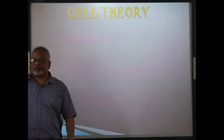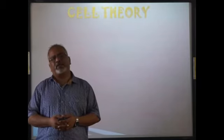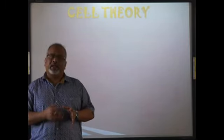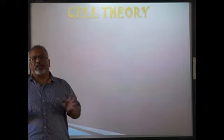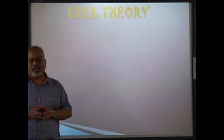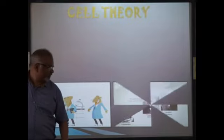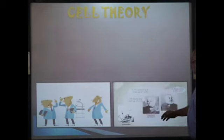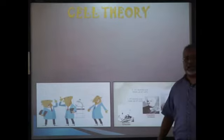Now, the cell theory. There were three scientists whose work led to the formulation of cell theory. They did not work together — there may have been a gap of about 50 years between them — but their combined work produced this cell theory. These three scientists are Matthias Jacob Schleiden, Theodor Schwann, and Rudolf Karl Virchow. You must remember these three names — they are very important and will be asked about in higher classes as well.